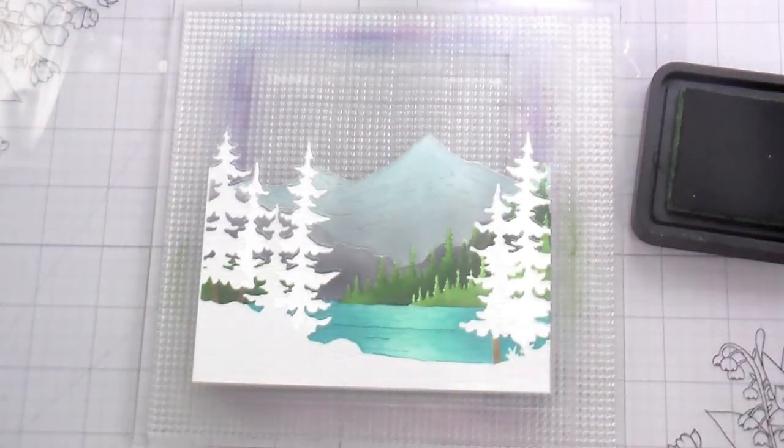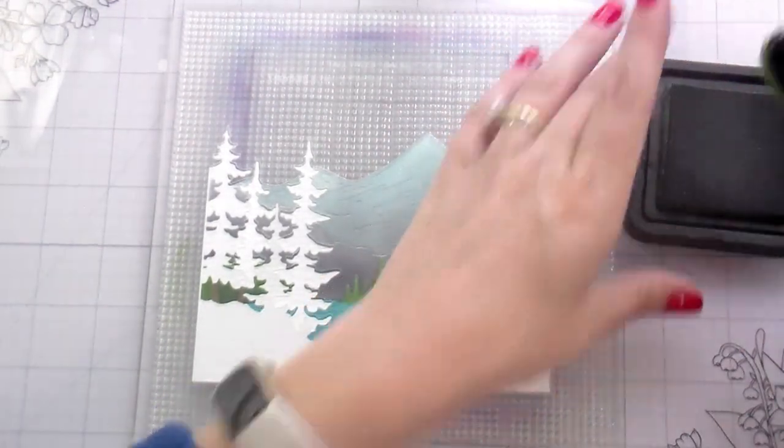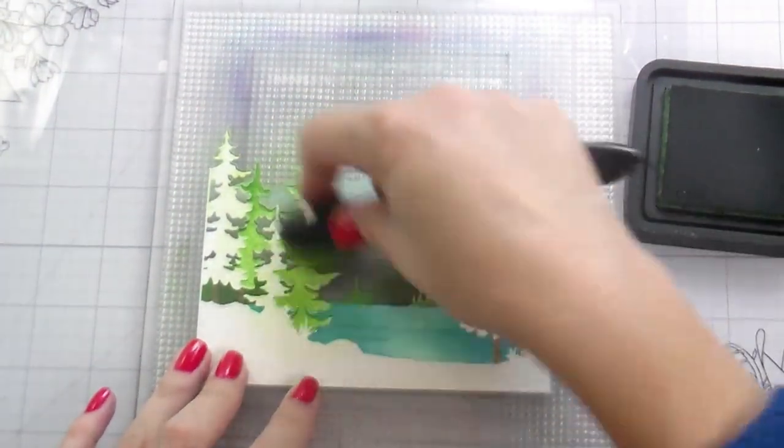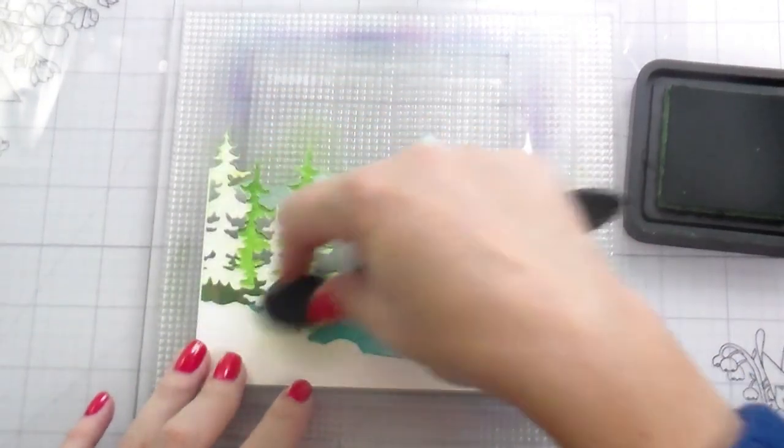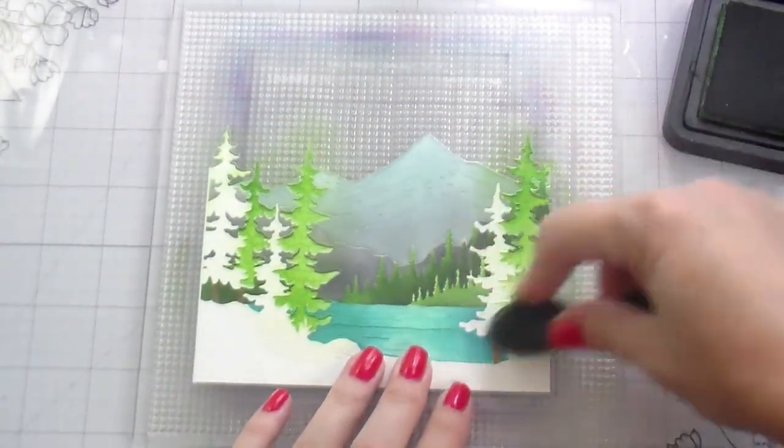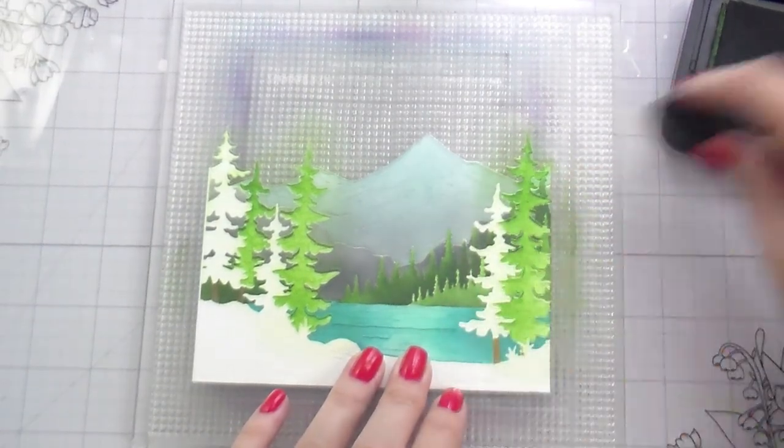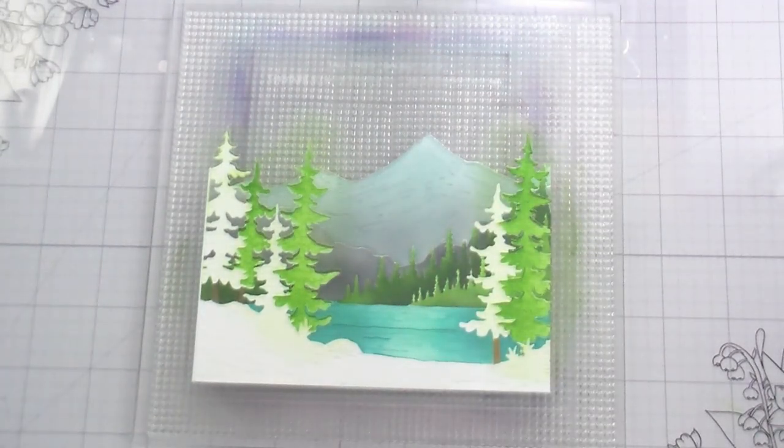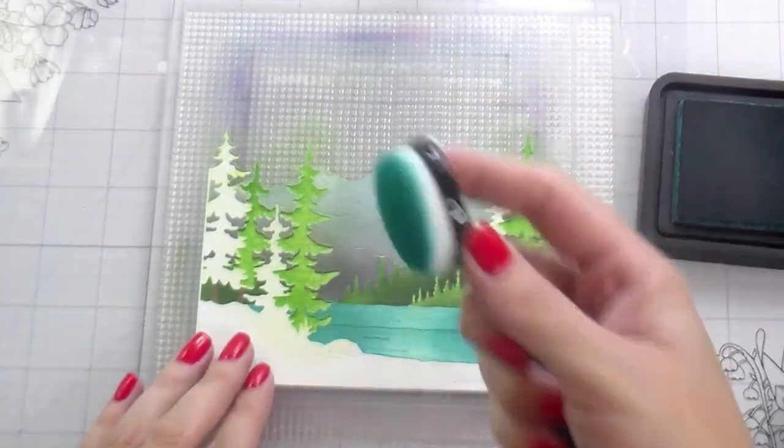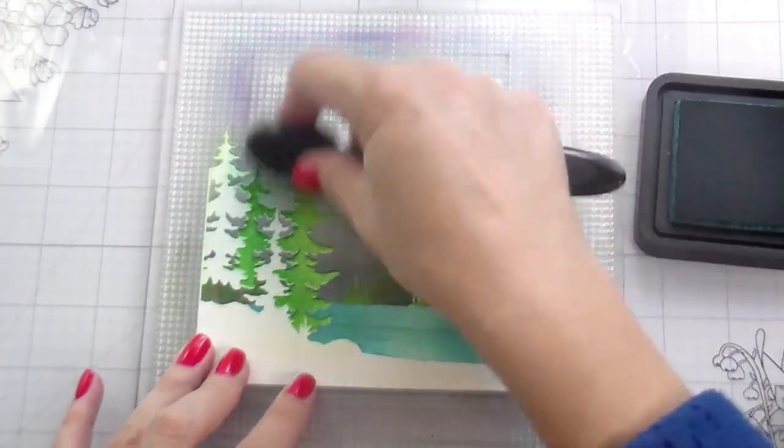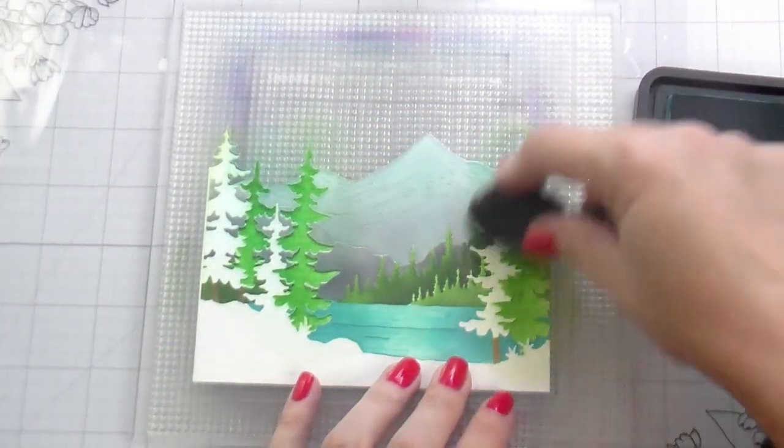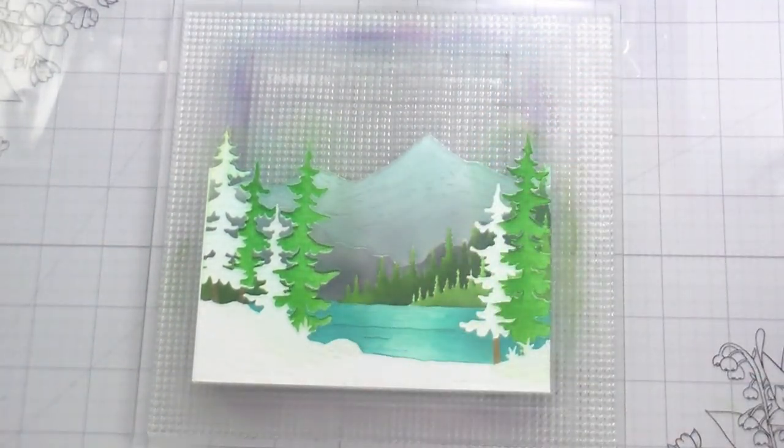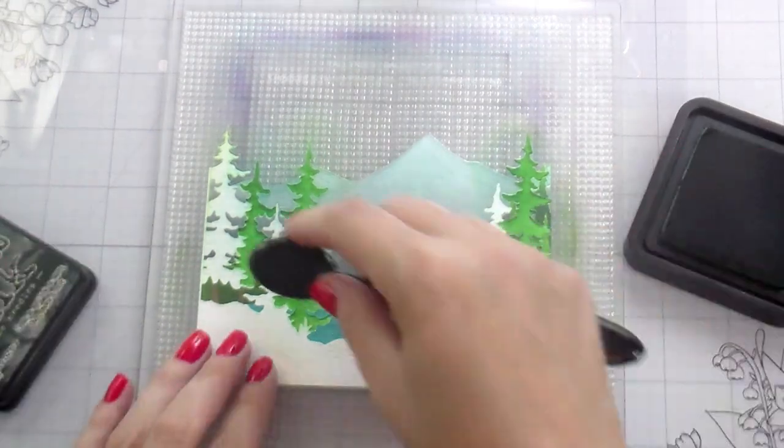But I think it came out super cute. And this one, because of the scene that I chose, was a little bit more challenging. It did involve some fussy cutting. But Honey Bee has a bunch of other scene builders. They have the cottage countryside or the seashore or there's another mountain one that are actual dies that could be layered. They all cut out different various layers of the scene.